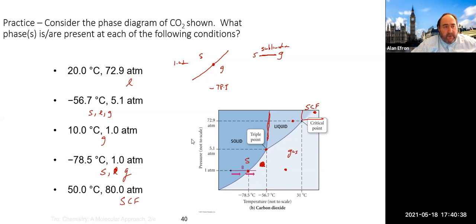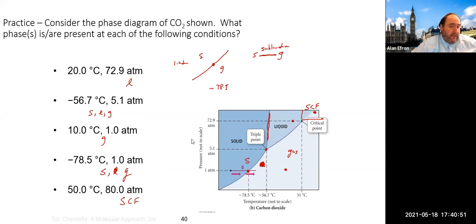Going from solid to liquid to gas, things gain more energy. They can move past each other into the liquid phase, then escape into the gas phase. Vice versa, exothermic processes have negative energy values as you go backwards. Going from gas to liquid, those gas molecules no longer have enough energy to get away from each other — they stick and fall into the liquid phase. Then transitioning from liquid to solid, they no longer have enough energy to pass each other.